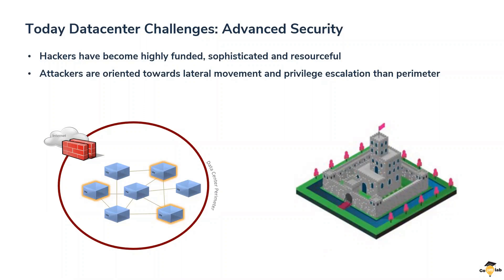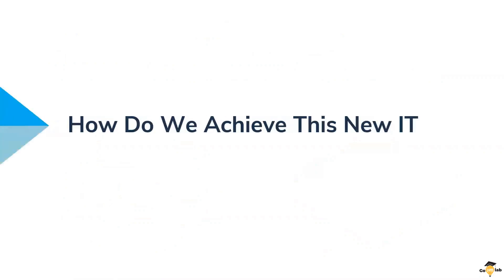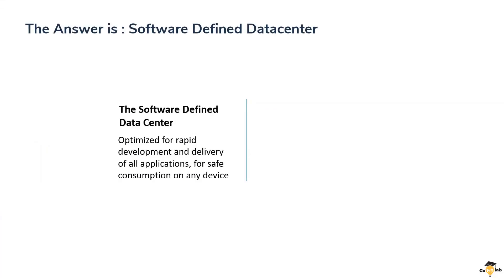These are the challenges every organization faces with the traditional model, which is why enterprise customers couldn't reach the level of Google, Amazon, and Facebook. But now, every enterprise customer wants their data center to be more agile, more flexible, and able to roll out applications much faster — reducing the application release cycle from one year to maybe one month or a few weeks. The answer to all these puzzles is the software-defined data center.